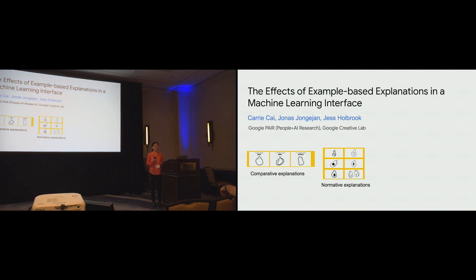Hi, my name is Carri Khai. I am a research scientist at Google Brain, and today I'll be presenting our work on example-based AI explanations. This was joint work between Google's Creative Lab and Google's People Plus AI Research Initiative.